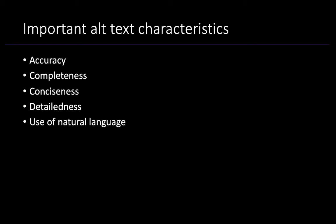First, we wanted to share the important alt text characteristics that our participants reported. The most important characteristic by far was accuracy — inaccurate alt text was considered misleading. The next most important characteristic was completeness, meaning that the alt text wasn't missing any important information. The remaining three characteristics — conciseness, detailedness, and use of natural language — all varied in importance between participants.